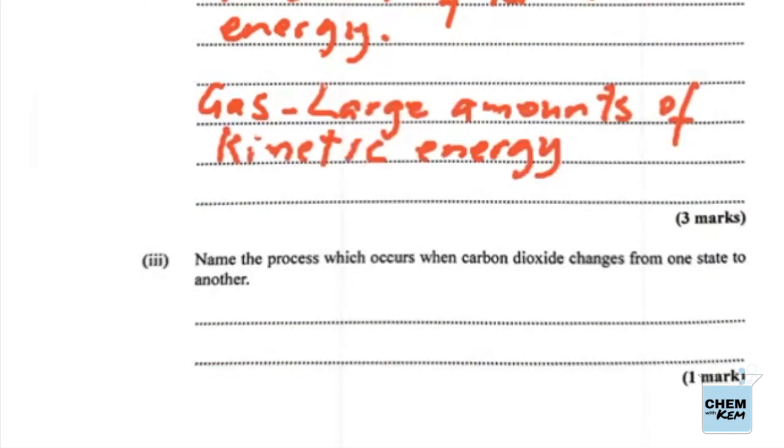Part three: Name the process which occurs when carbon dioxide changes from one state to another. We have to appreciate the two states it's in first. It can be in the solid state, it can be in the gaseous state, so that would be sublimation.